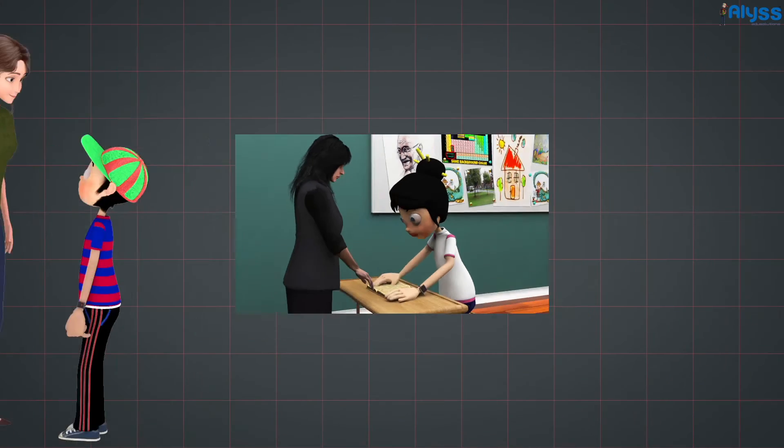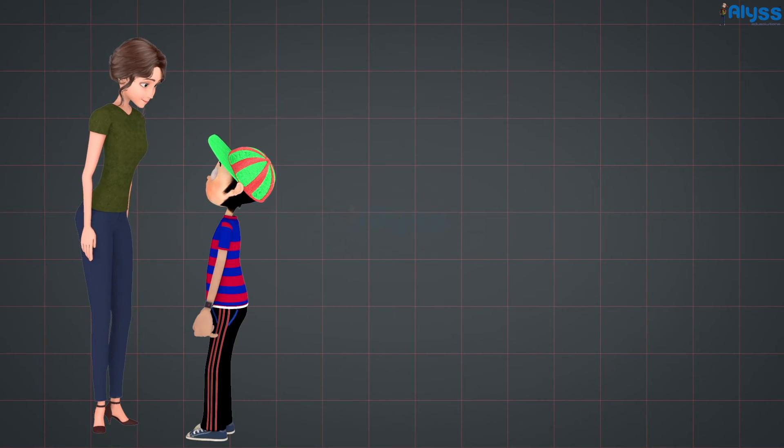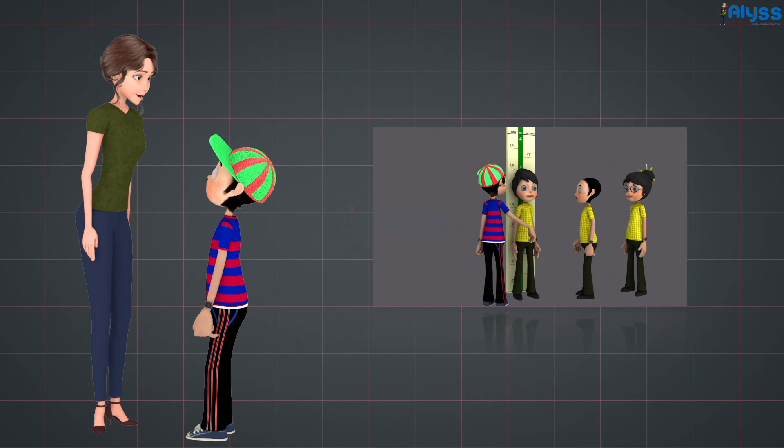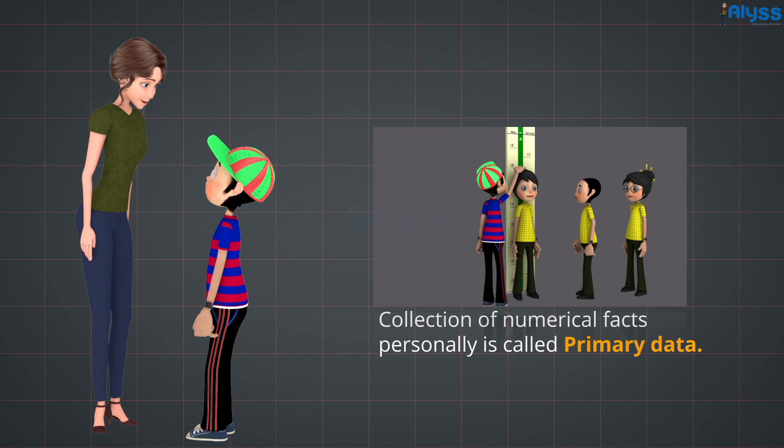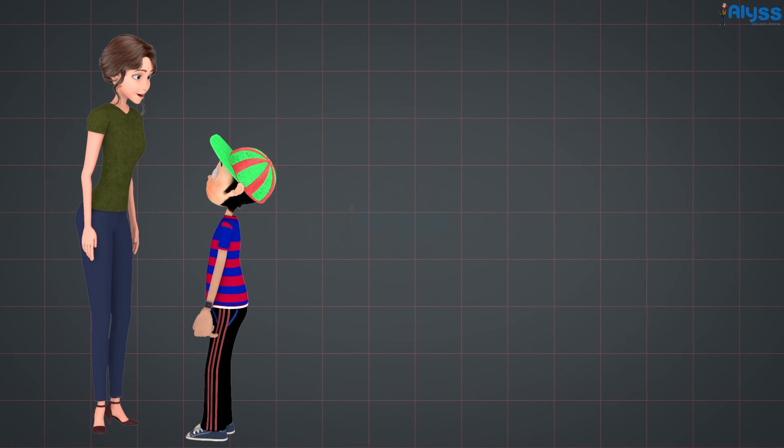The approach that Rajesh takes is as follows: In example 1, Rajesh collects the information by measuring the heights of the 15 students by himself. Collection of numerical facts personally is called primary data.